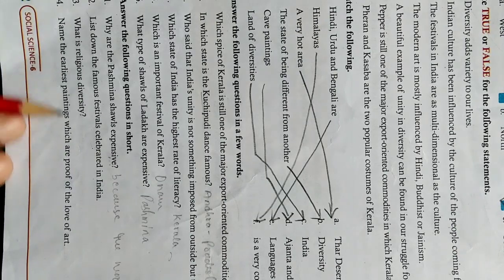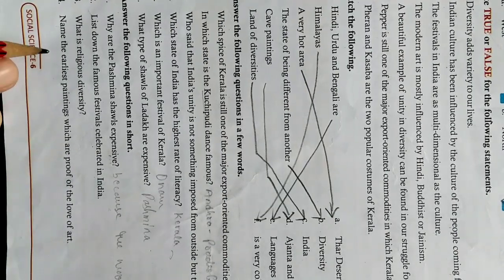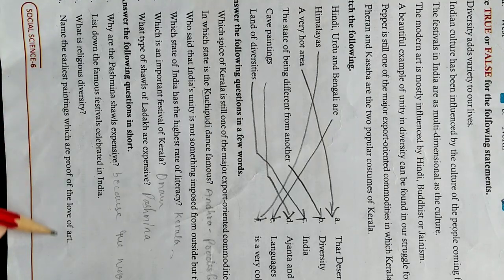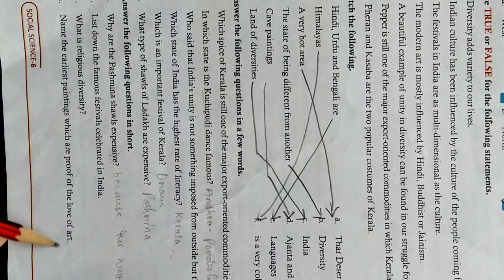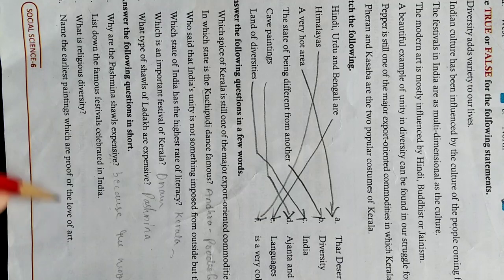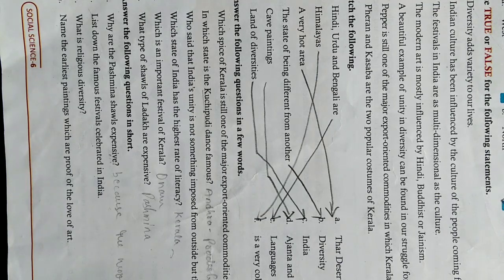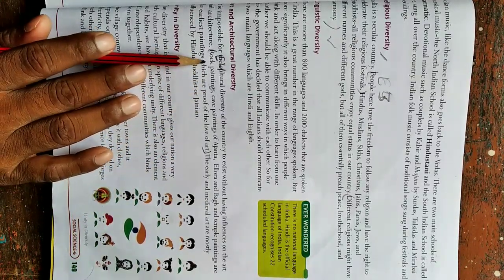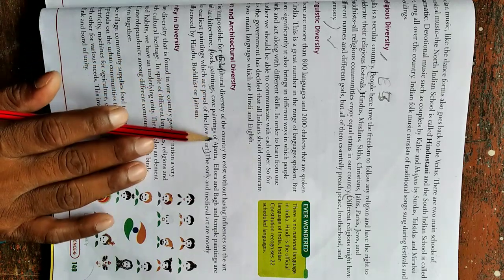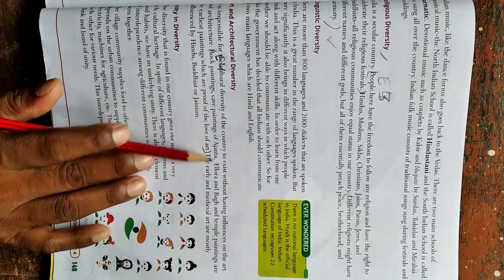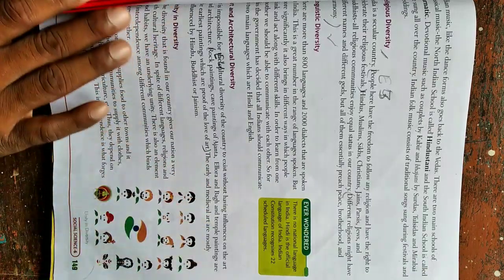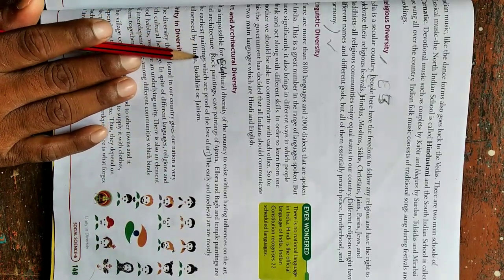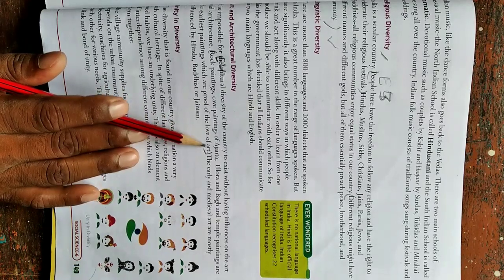Next fourth question. Name the earliest paintings which are proof of love of art. Jo Bharat ki earliest painting hai, jo prarambhik painting hai which are proof of love of art, woh kaun kaun si hai? Jo kala sundarata ki prateek hai, voh nimna hai. Jaisi rock painting, rock chatanon ki painting, cave painting jaise Ajanta ki gufaon ki painting, Ajanta, Ellora, and temple paintings are the earliest paintings. Or mandir par jo painting ki gayi ho, yeh sab earliest painting ki prateek hai which are proof of love of art.